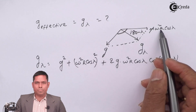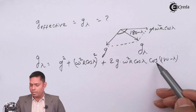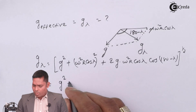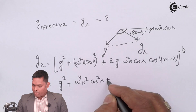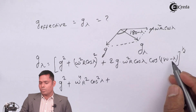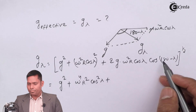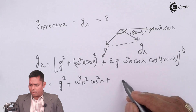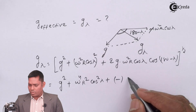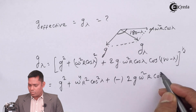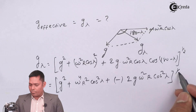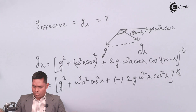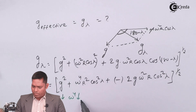Since cos(180 minus lambda) equals minus cos lambda, the expression becomes the square root of G squared plus omega to the power 4 times R squared cos squared lambda minus 2G omega squared R cos squared lambda, all to the power half. Because omega is very small, omega to the power 4 tends to zero, so that term cancels.